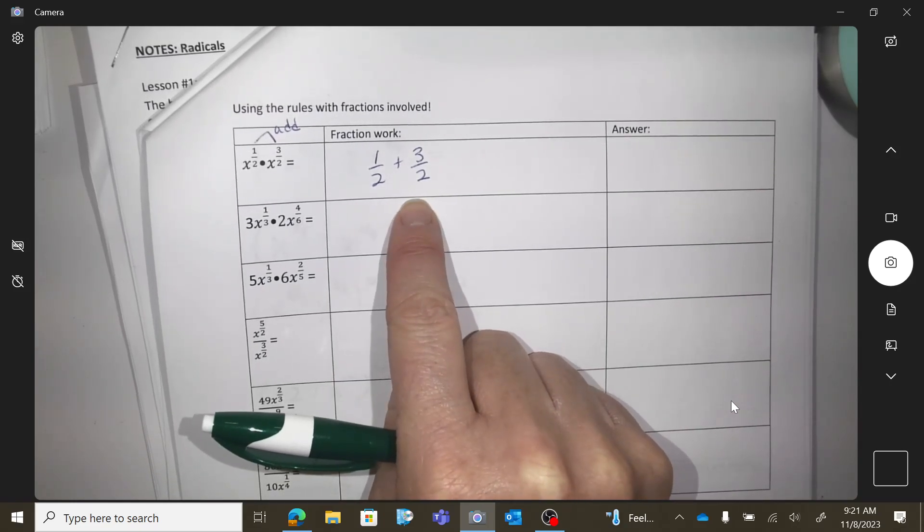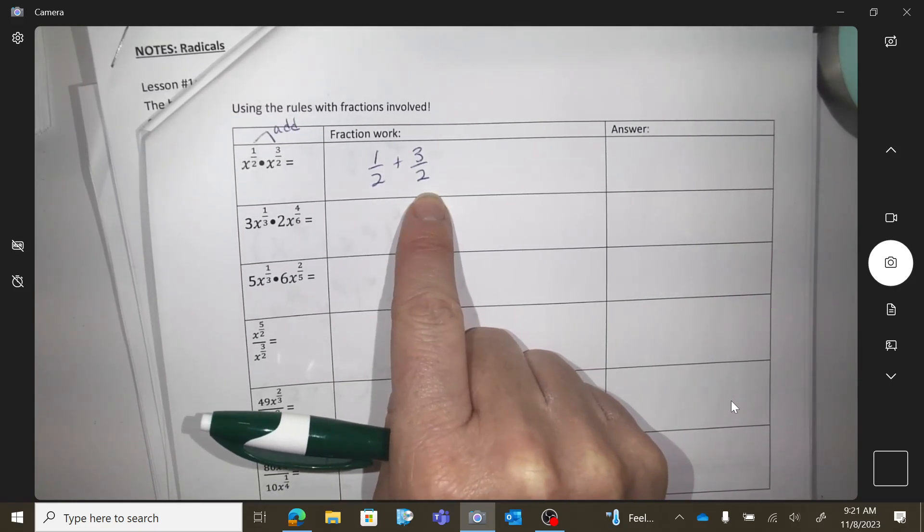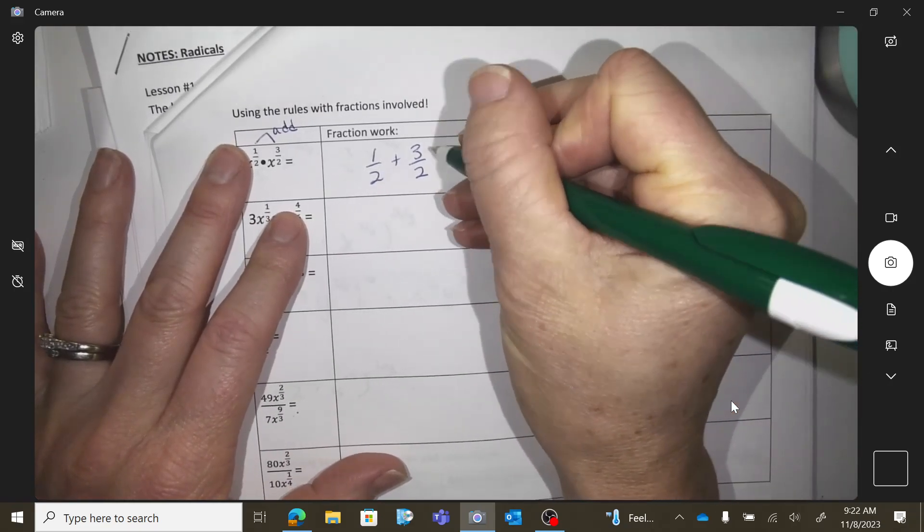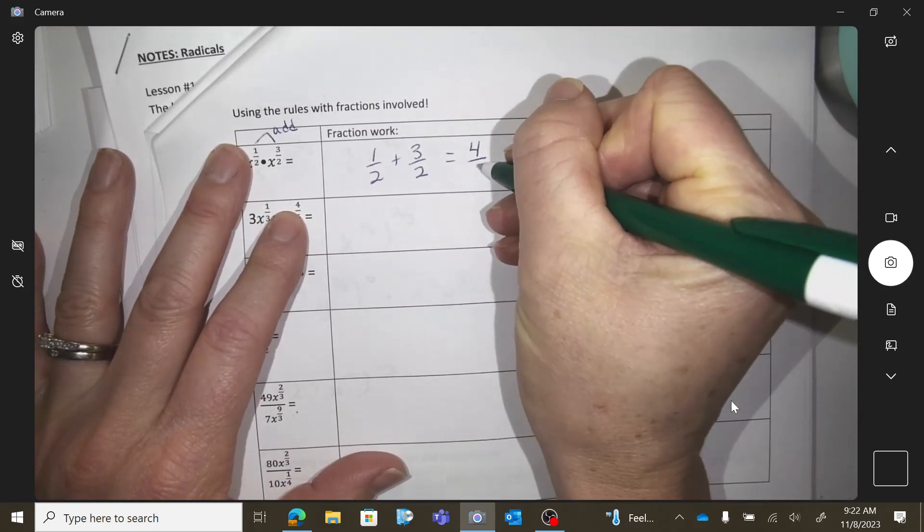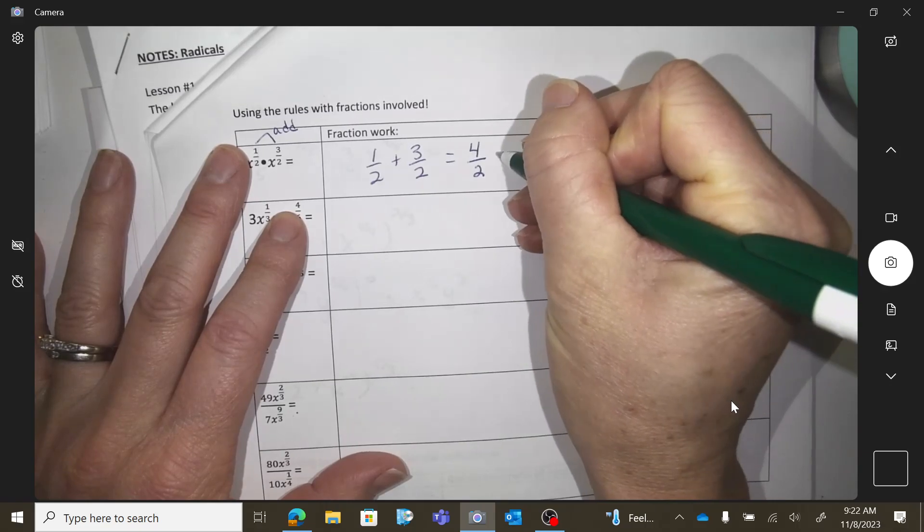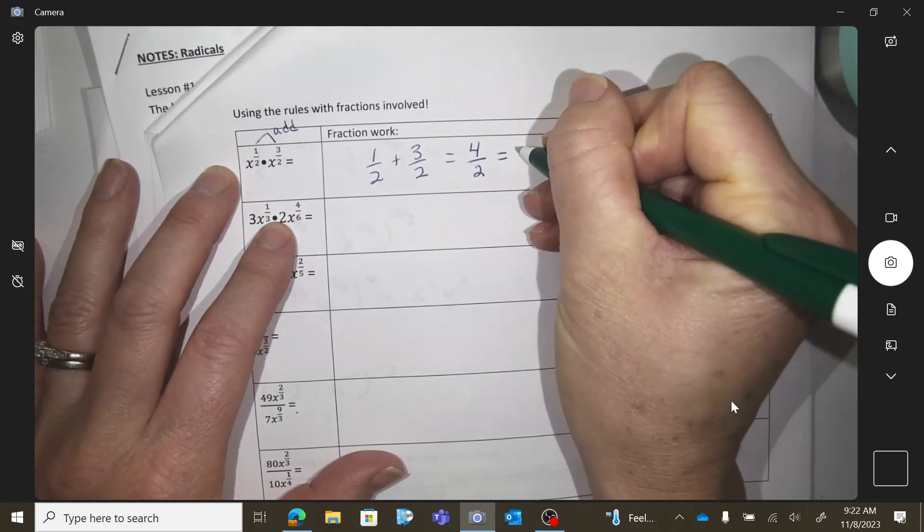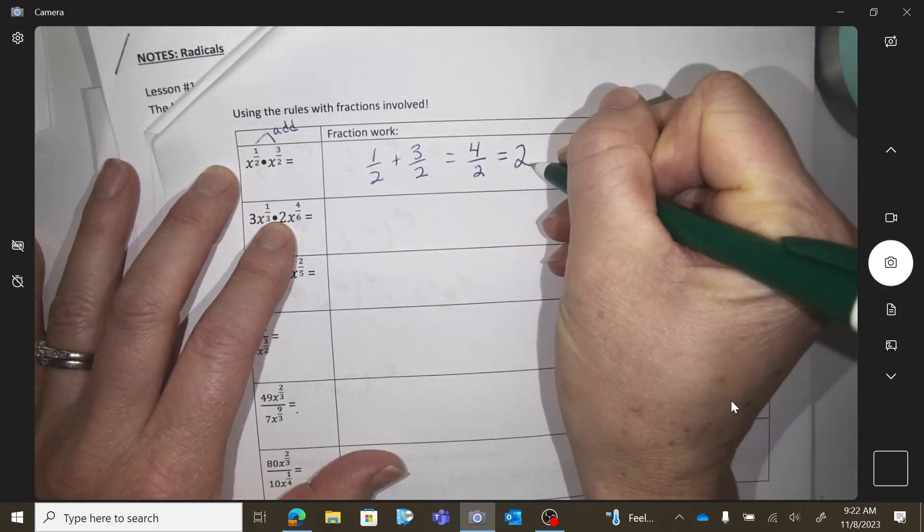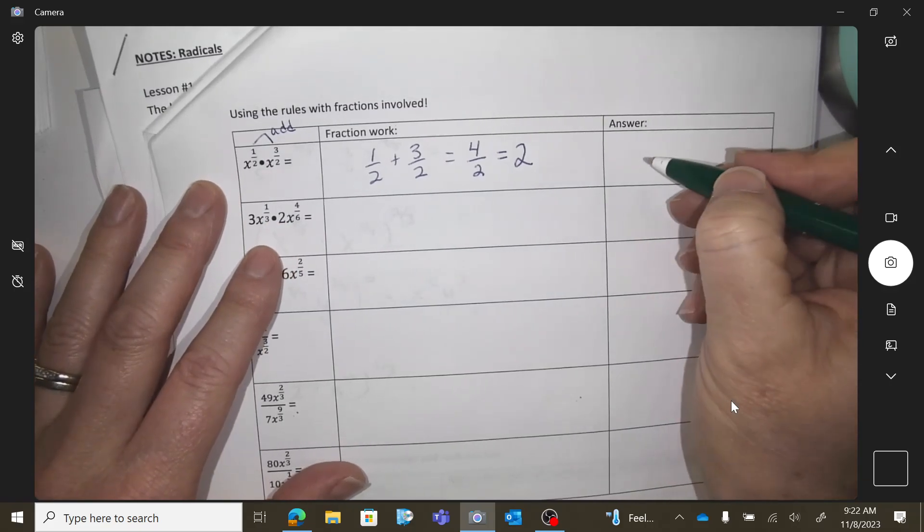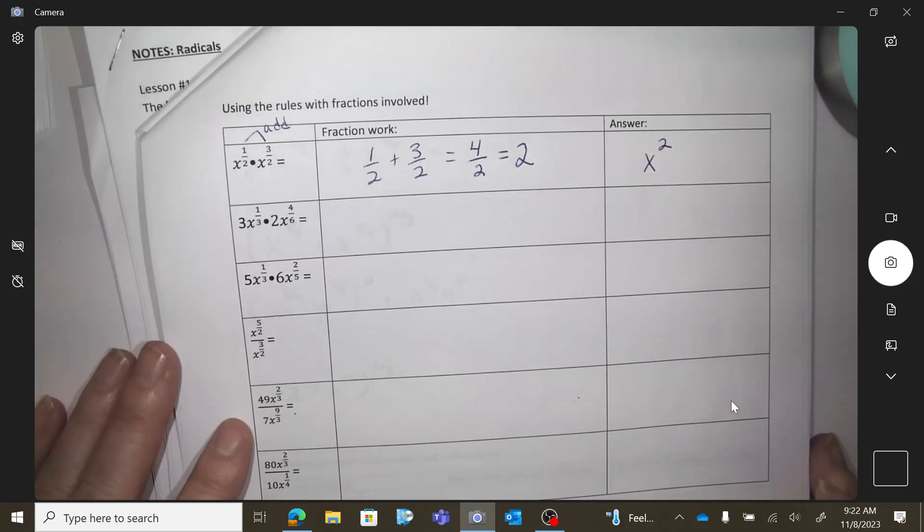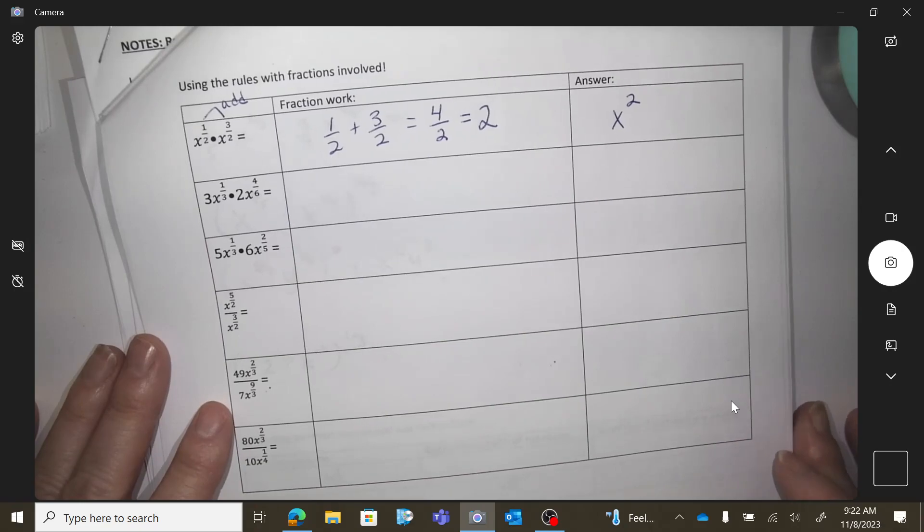You need the bottom to be the same. So this has a 2, this has a 2, so it's good to go. So this would be 4 over 2. And then 4 divided by 2 is actually 2. So my answer would be x squared.